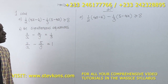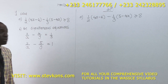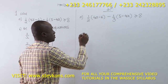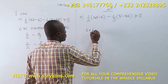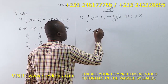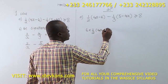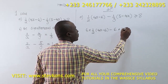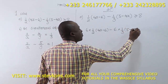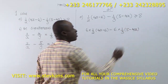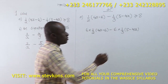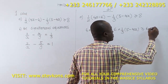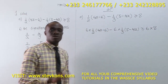What is the LCM? LCM is 6, so let's multiply through by the LCM which is 6. So you have 6 times 1/2 times (4x minus 6), minus 6 times 1/3 times (5 minus 4x), greater than or equal to 6 times 8.